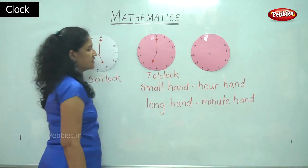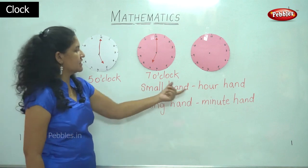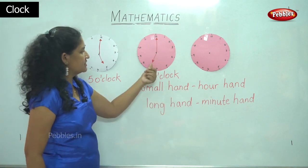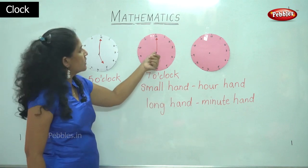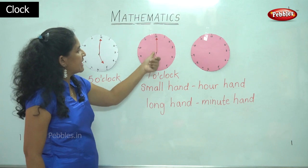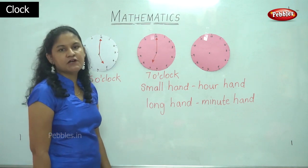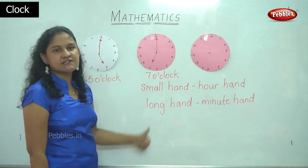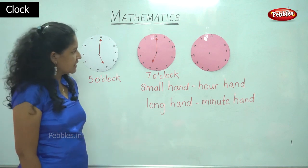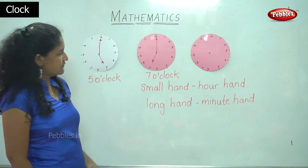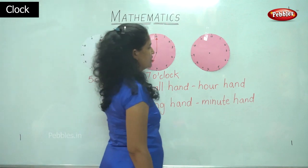When it is seven o'clock, the small hand or the hour hand points towards seven and the long hand or the minute hand points to number twelve, and the time is read as seven o'clock. Now the next time we are going to see is eight o'clock.